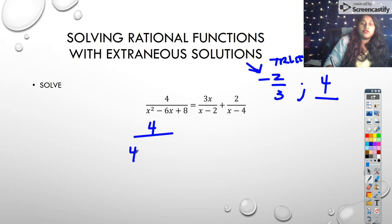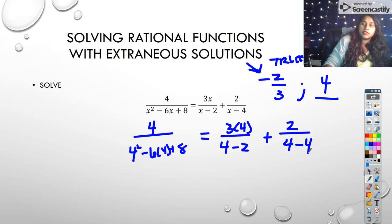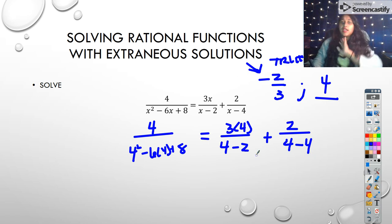So this would become 4 over 4 squared minus 6 times 4 plus 8 would be equal to 3 times 4 over 4 minus 2 plus 2 over 4 minus 4. And already, before I have to do anything else, I can look for something because we've got rational functions. All I have to do is look if there's something funky in the denominator. Well, over here, this is going to be 8 and this is going to be 24 and this is going to be 8. So maybe this 0 is out, but we're not 100% sure.